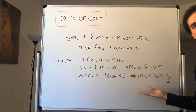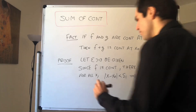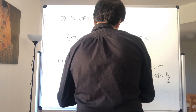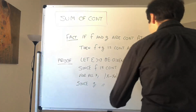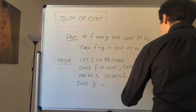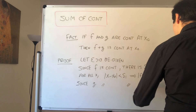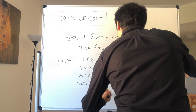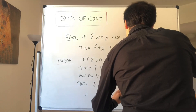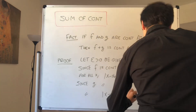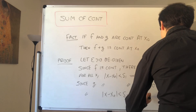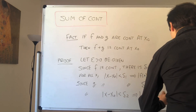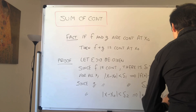We play the same for g. Since g is continuous at x naught, there is delta 2 such that for all x, |x minus x naught| less than delta 2 implies |g(x) minus g(x naught)| is less than epsilon over 2.